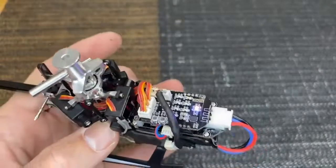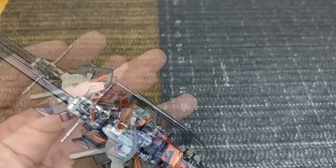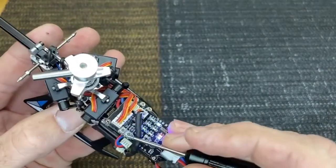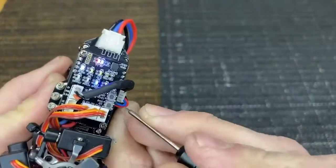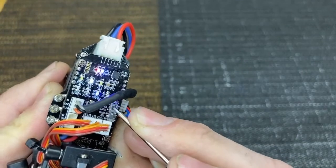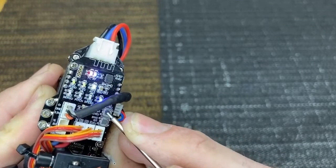Go into your servo menu by pushing and holding the gyro button for a few seconds. Then hit the gyro button until you get to servo centering mode.